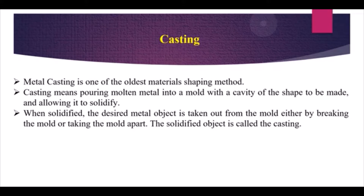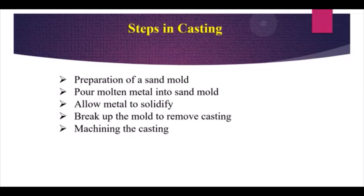Metal casting is one of the oldest processes, started in early BC. Casting is the process of pouring molten metal into a mold that has a cavity of the desired shape, then allowing it to solidify. Once solidified, the desired object is removed from the mold, either by breaking or separating the mold, and this solidified object is called a cast product. The steps involved are: preparation of the sand mold, pouring molten metal, allowing it to solidify, then breaking the mold and machining the casting.